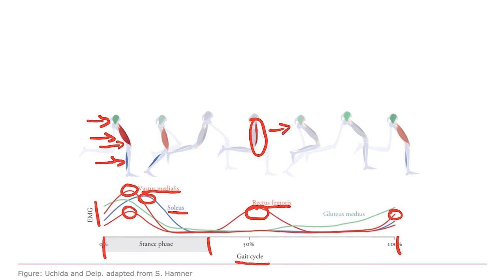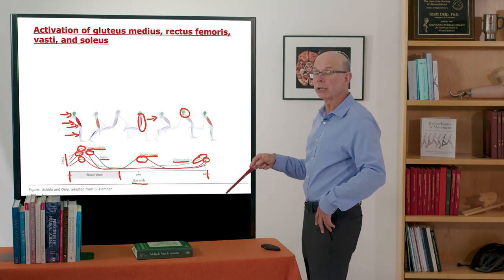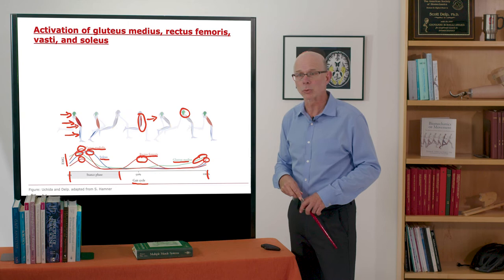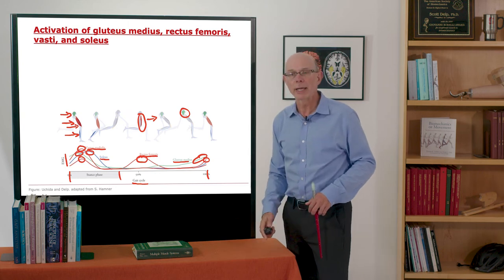You also see soleus, we've seen soleus, gluteus medius. Here we are, gluteus medius up here in the hip. It's active during stance and then it's also slightly active during swing. Part of the gluteus medius is anterior to the hip and can flex the hip and that can be valuable as well. So those are the activations. Let's look at what these muscles are doing.